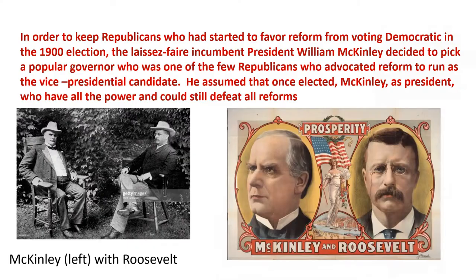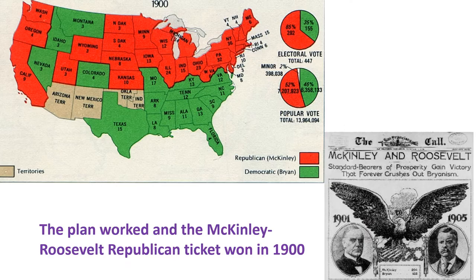At this time, the Republican laissez-faire conservative president William McKinley was still in office, and the 1900 election was coming. He was aware that more and more Republicans were starting to vote for reform, and the Democratic Party was very reformist. What he decided to do was find one of the few Republican governors who advocated reform to run as his vice presidential candidate — assuming that once elected, McKinley as president would have all the power and could still defeat the reforms. McKinley chose the popular reformist New York governor, Theodore Roosevelt. The McKinley-Roosevelt Republican ticket won in the 1900 election.